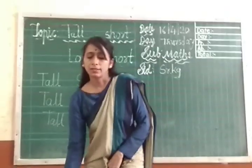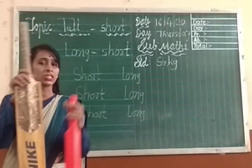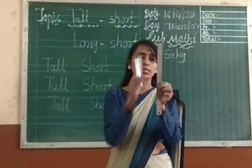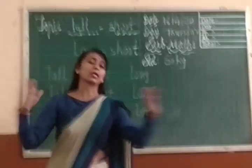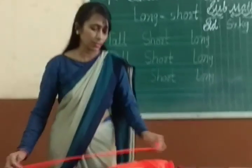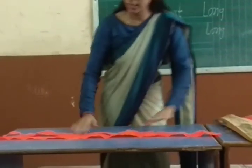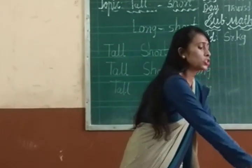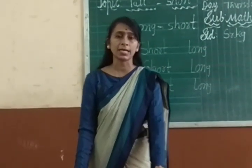Very good. In these two fingers, which one is tall? Yes — this one is tall and this one is short. Understand? Very good. Now, long and short. When we compare two objects based on their length, we use long and short. Look here — this ribbon is long and this ribbon is short. In these two, this tick is short and this tick is long. Understand?